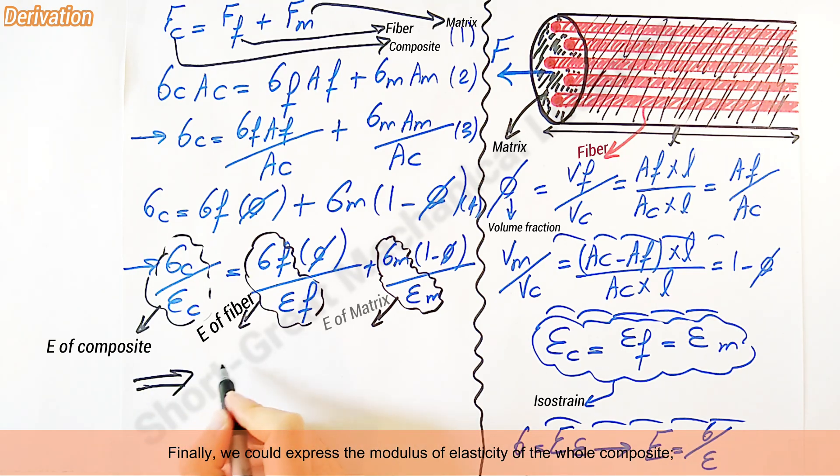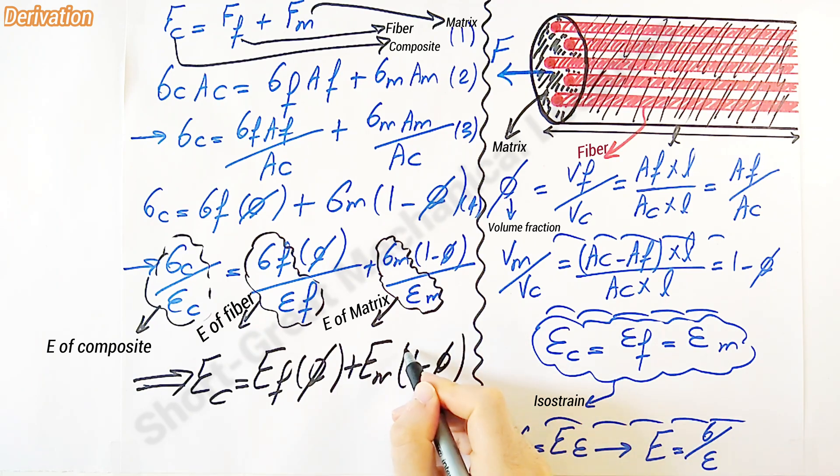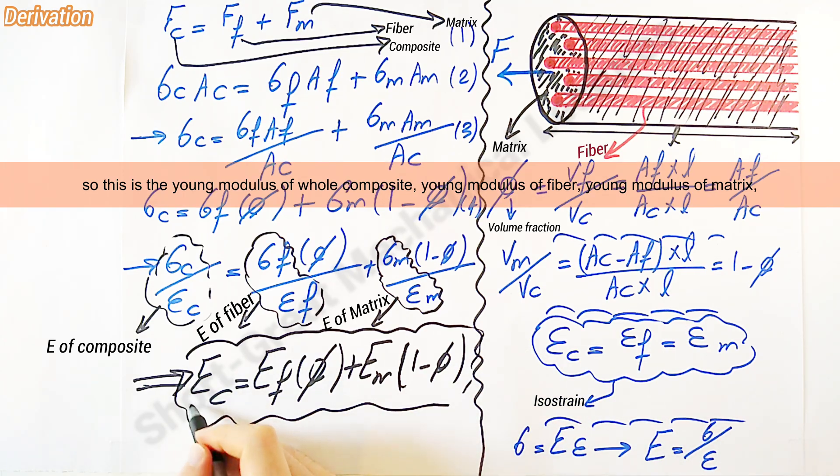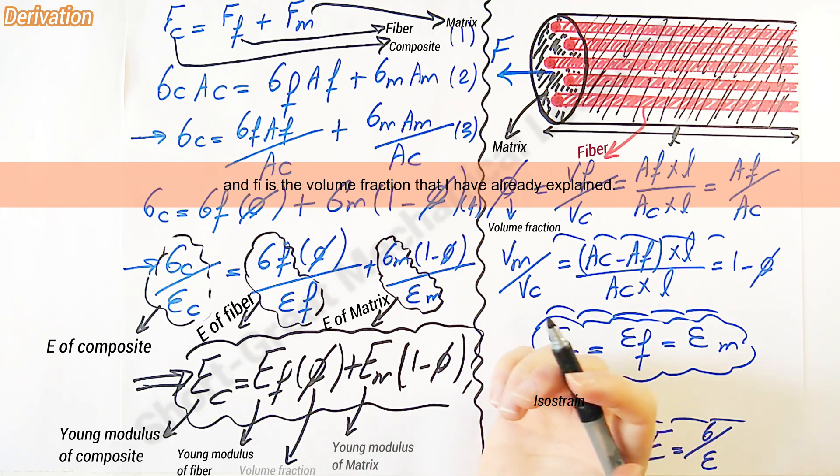Finally, we could express the modulus of elasticity of whole composite. This is the Young's modulus of whole composite, Young's modulus of fiber, Young's modulus of matrix, and phi is the volume fraction that I have already explained.